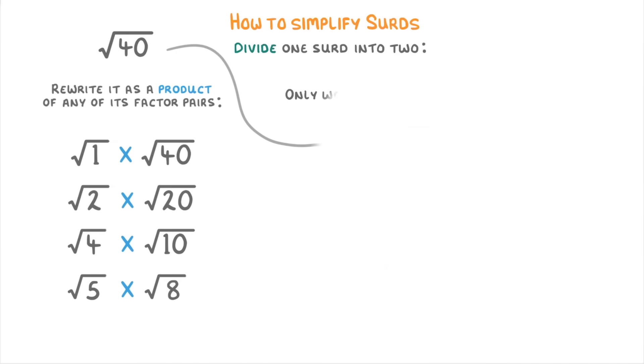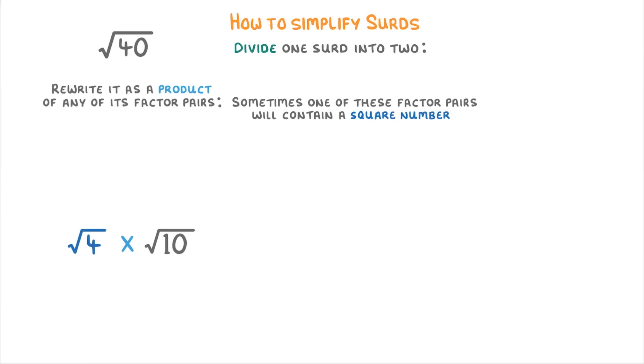Getting back to writing them as the product of their factor pairs though, the benefit of doing this is that sometimes one of these factor pairs will contain a square number, like this one here which has a root 4. Because 4 is a square number, we can simplify the root 4 to a 2, so that it becomes 2 times root 10, which we write as 2 root 10. So 2 root 10 is a simplified version of square root 40, and that's all we need to do to simplify a surd.